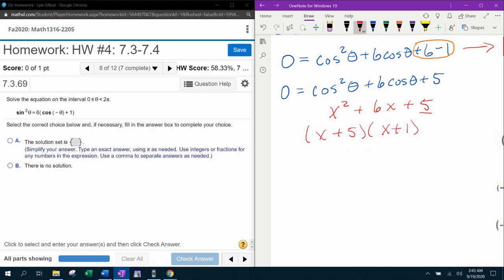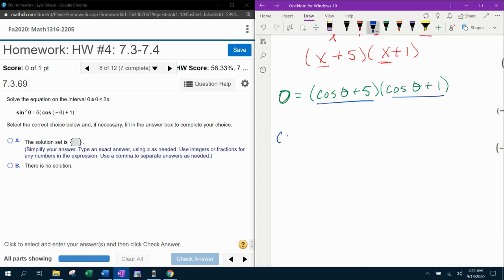Now remember that our x was really cosine. X squared, x is cosine, and so where we have these two x's, that's really going to be cosine of theta. So what do we have? We've got zero equals cosine theta plus five, cosine theta plus one. And remember if you're solving a quadratic, once you get it factored, the next step is to set each factor equal to zero and solve. So now we can say cosine theta plus five equals zero, and cosine theta plus one equals zero. We're going to set each factor equal to zero and solve.